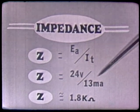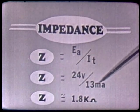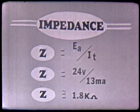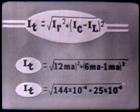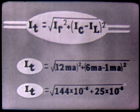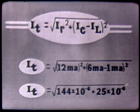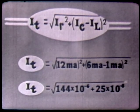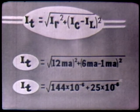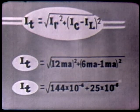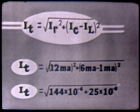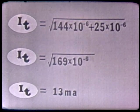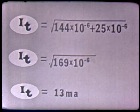Although I chose to solve for total current graphically, we can also use a much more accurate method: the Pythagorean theorem. IT is equal to the square root of IR squared plus the quantity of IC minus IL squared. Substituting — 12 milliamperes for IR, 6 milliamperes for IC, and 1 milliampere for IL — 12 squared is 144 times 10 to the negative 6. 6 minus 1 is 5; 5 squared is 25 times 10 to the minus 6. Adding, 144 plus 25 equals 169 times 10 to the negative 6.